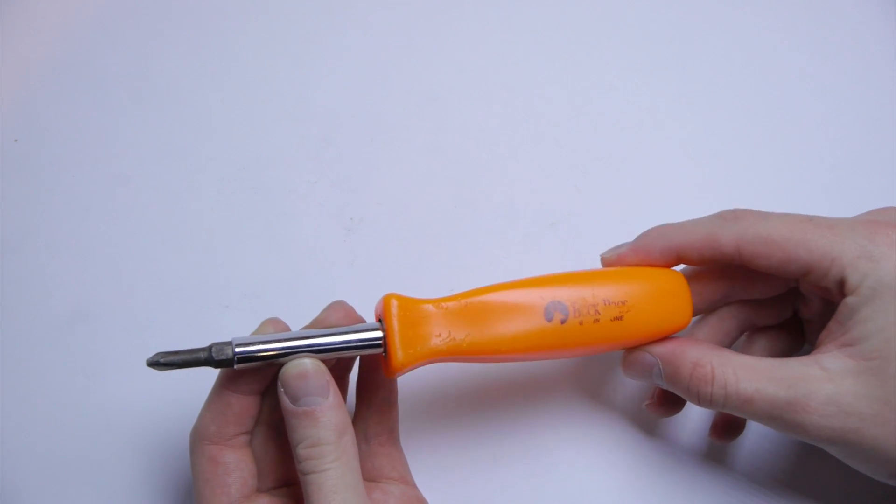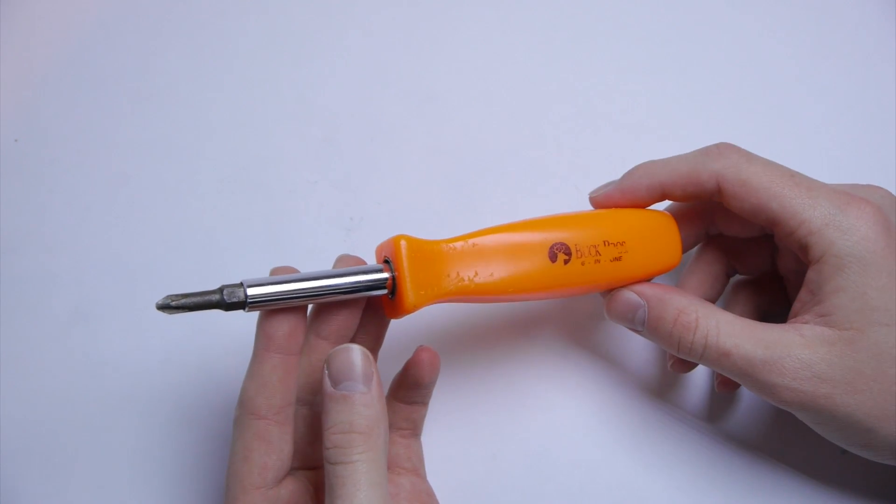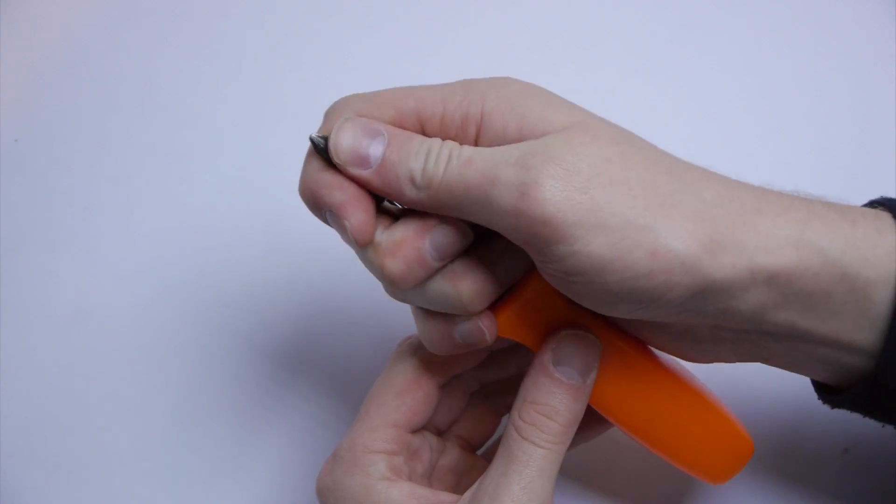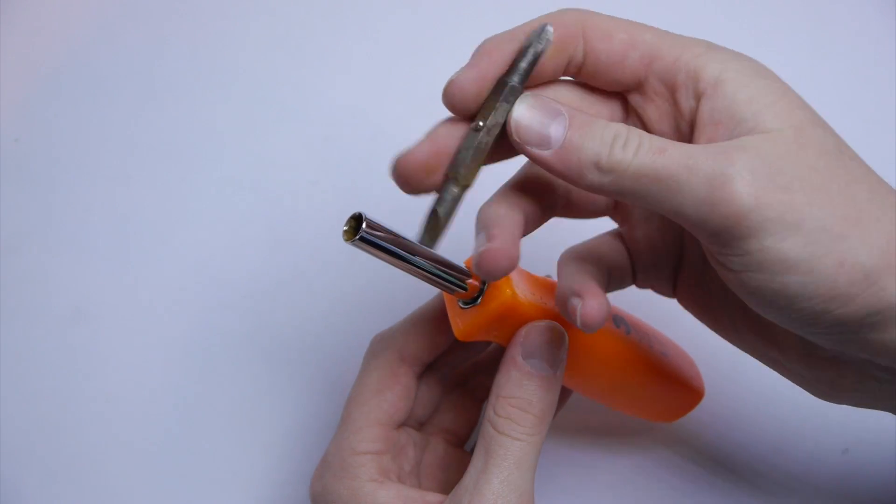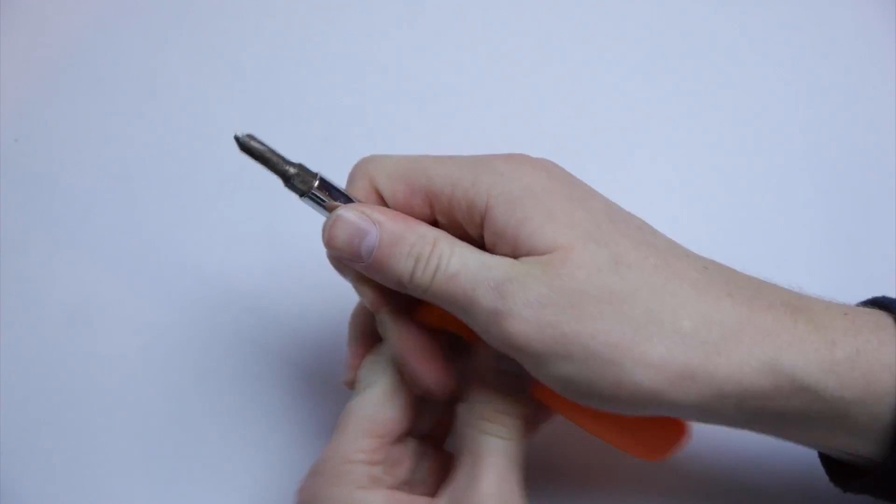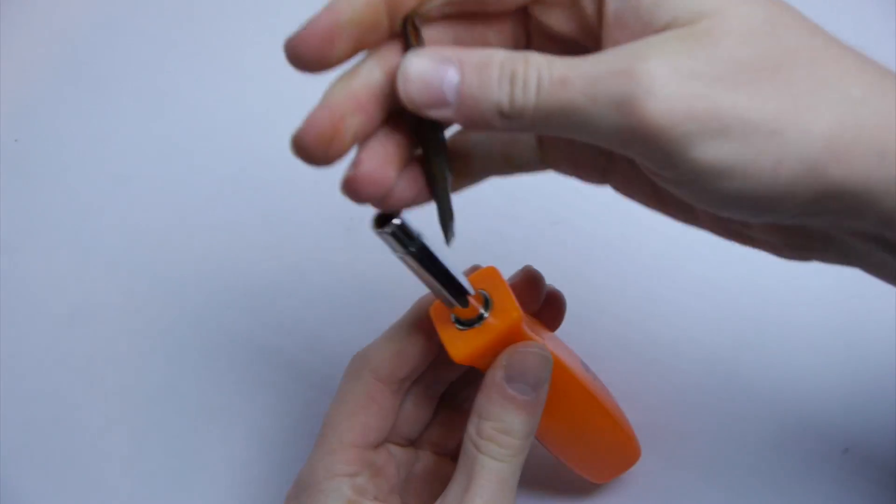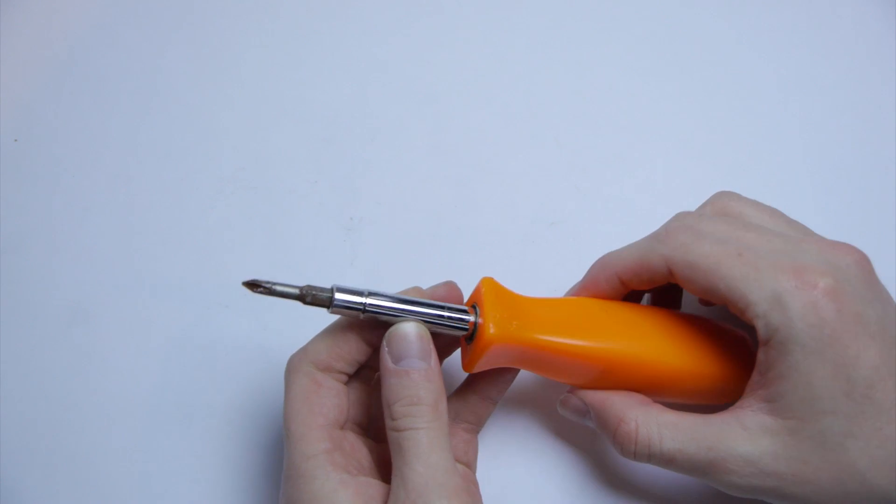If you choose any tool, the most important one to get is a good screwdriver. This one was only like $5 from the hardware store. It comes with four different tips, so you have two different sizes of flathead and two different sizes of Phillips. You can flip that around and flip this around. It's a very simple, cheap tool and you'll use this all the time.